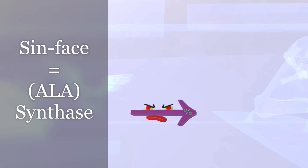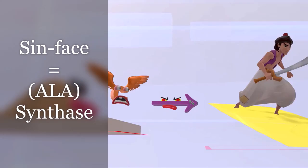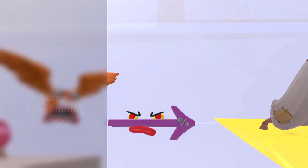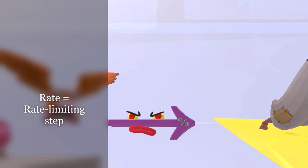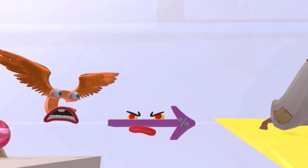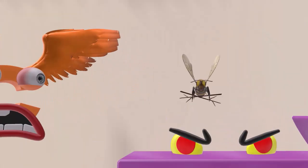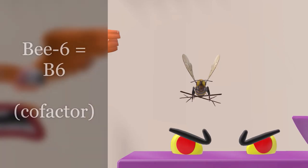ALA synthase is responsible for converting succinyl CoA plus glycine to ALA. The 'rate' sign over here reminds us this is the rate-limiting step of heme synthesis. There's also a bee holding sticks — 'bee sticks' for B6 — reminding us that vitamin B6 is a cofactor for this enzyme.